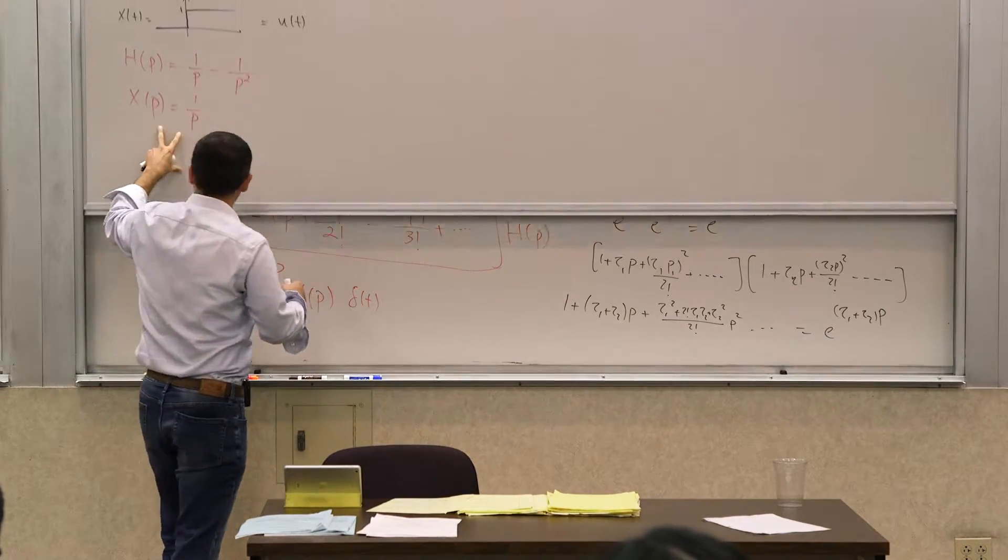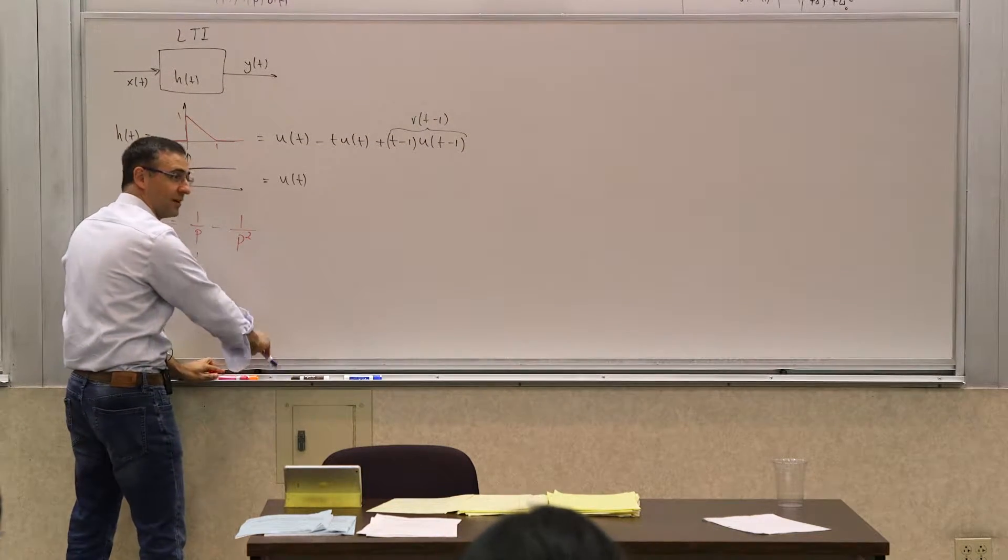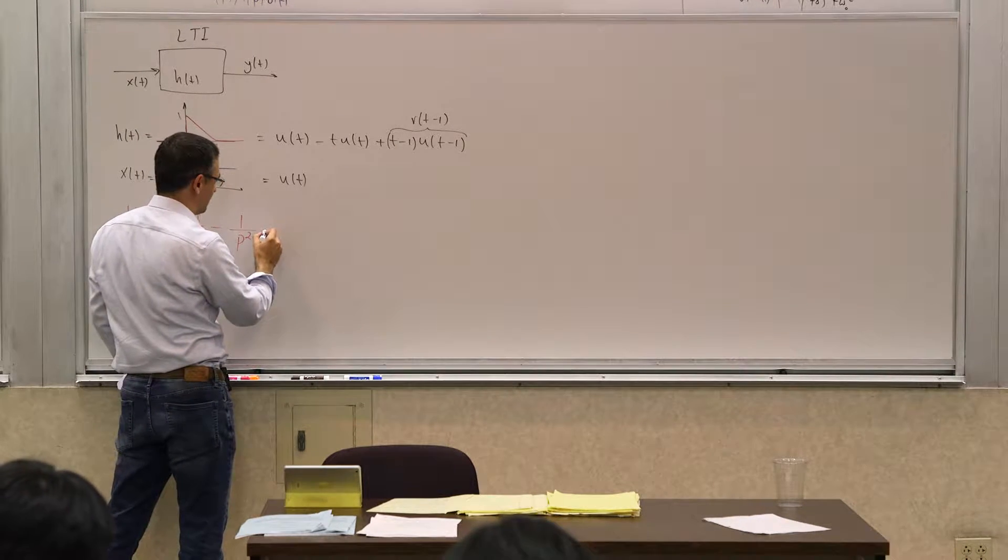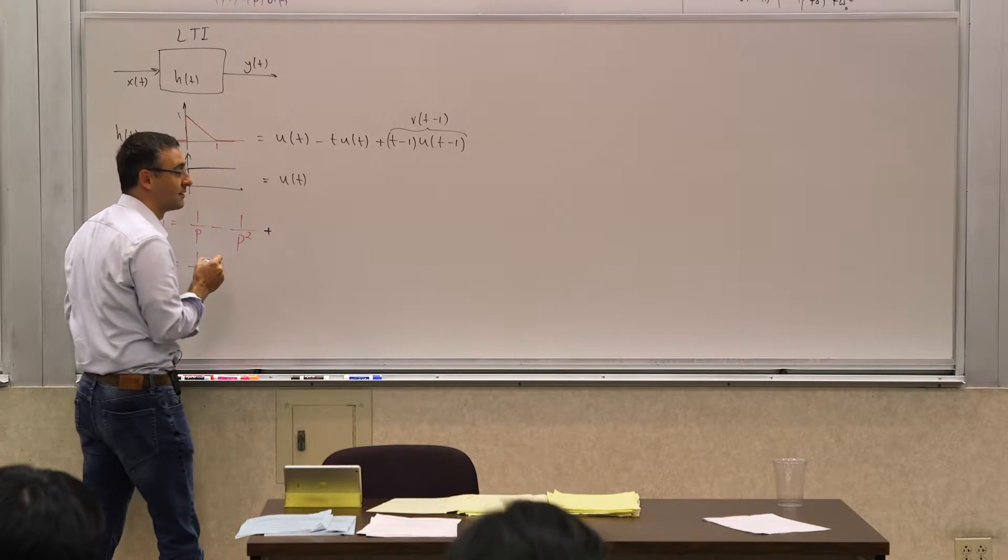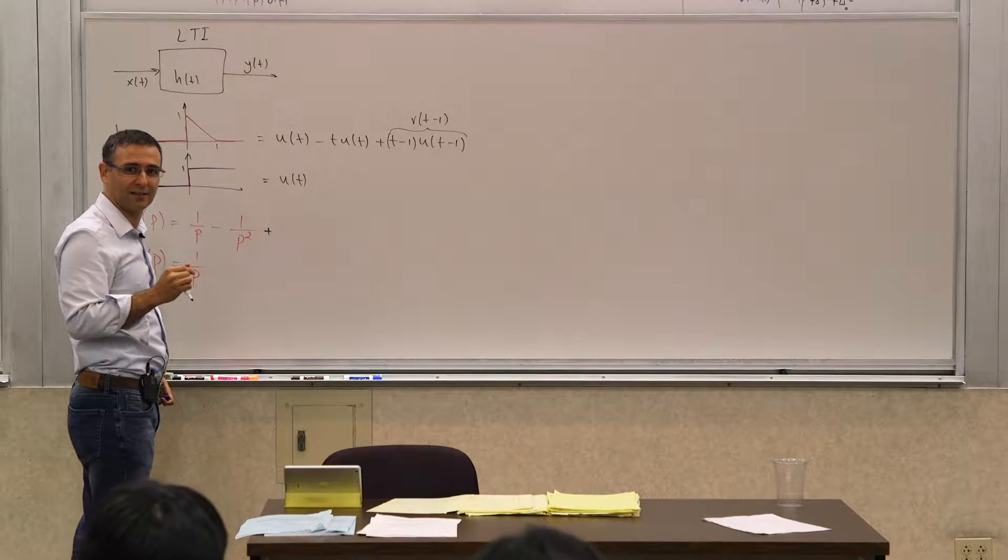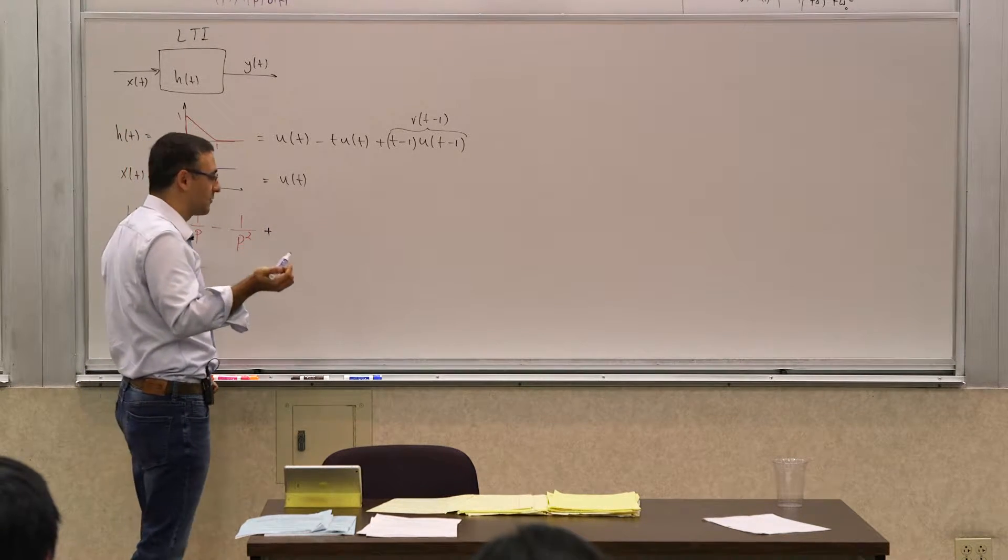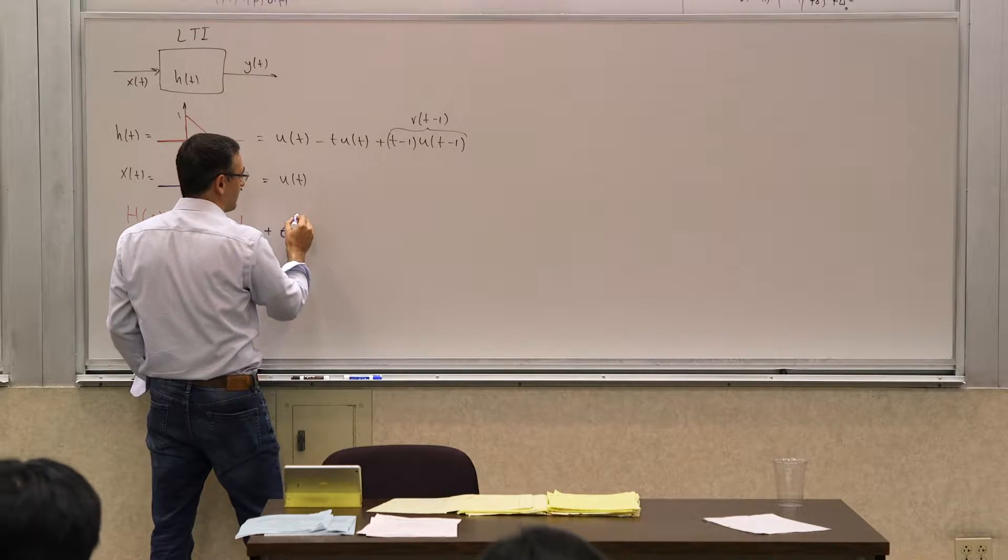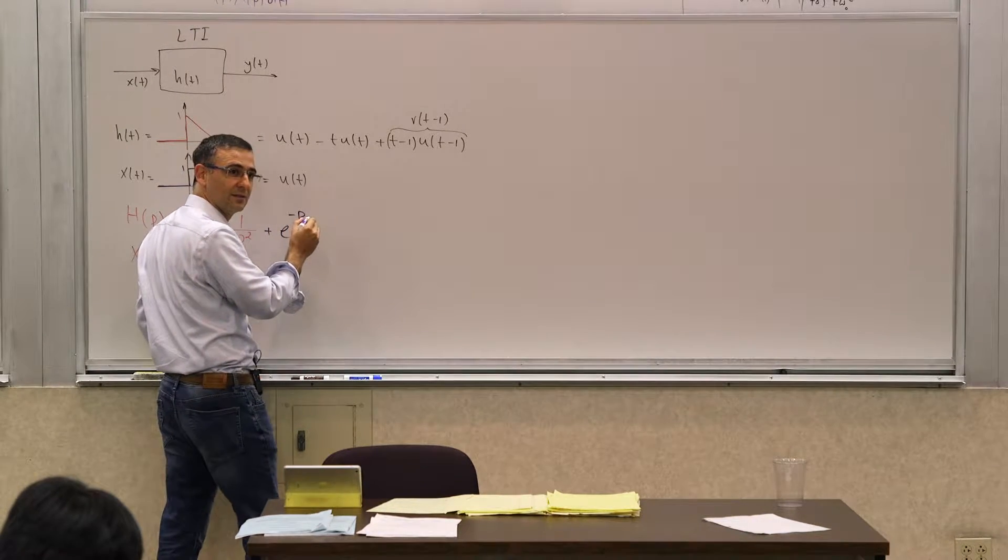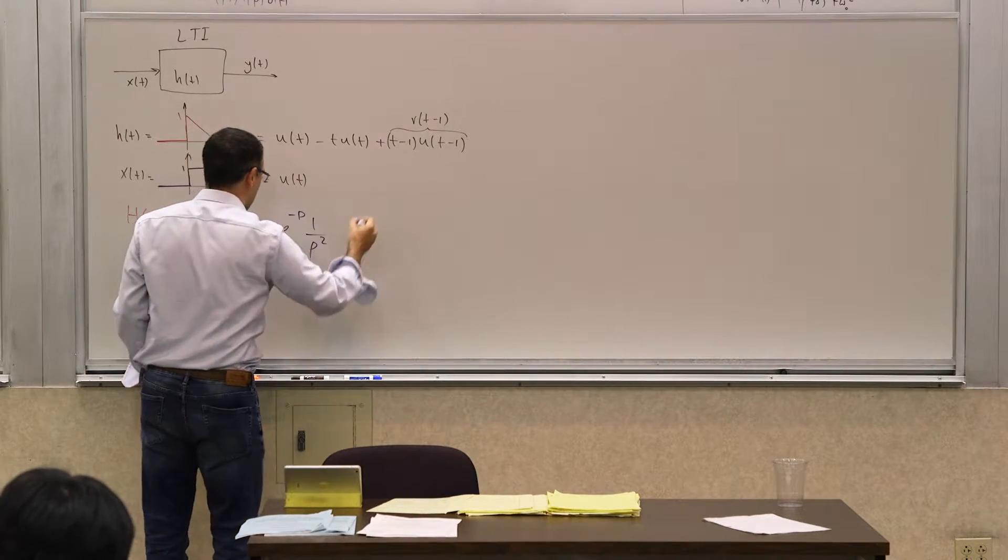So now let's bring it back to our example. So now what do we do? Now we know how to deal with this. So what is the next term? It's this guy with the delay, which is multiplied by e to the negative, well the delay is 1 in this case, so it would be e to the negative p. 1 over p squared, so that's that last term.